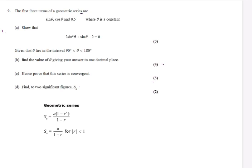So we've got a geometric sequence. Now if we think about a geometric sequence, that's when you're multiplying by a ratio each time. So your first term is A, your second term is A times that ratio, and your third term will be AR squared. The connection between these is that the second one divided by the first one will be the same as the third one divided by the second one.